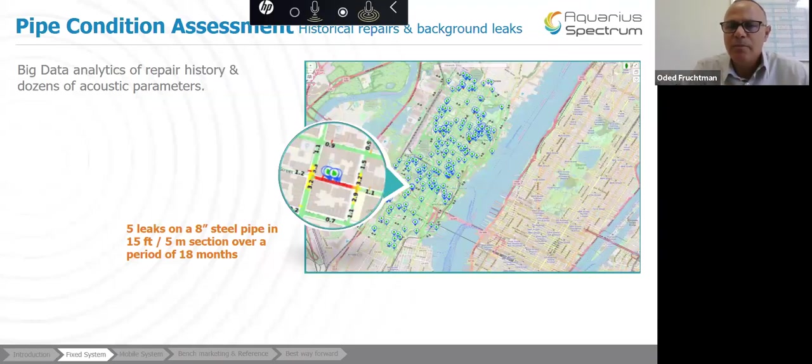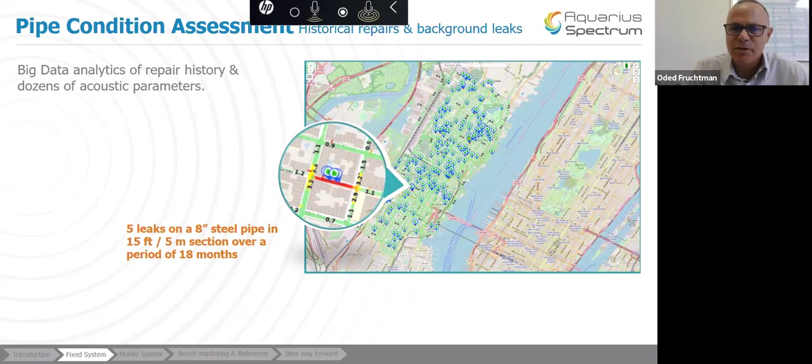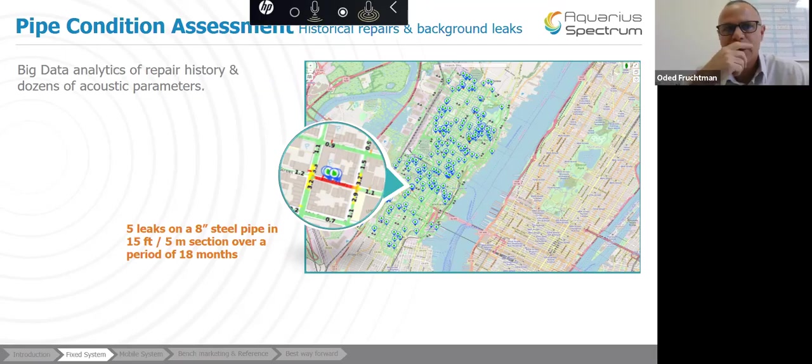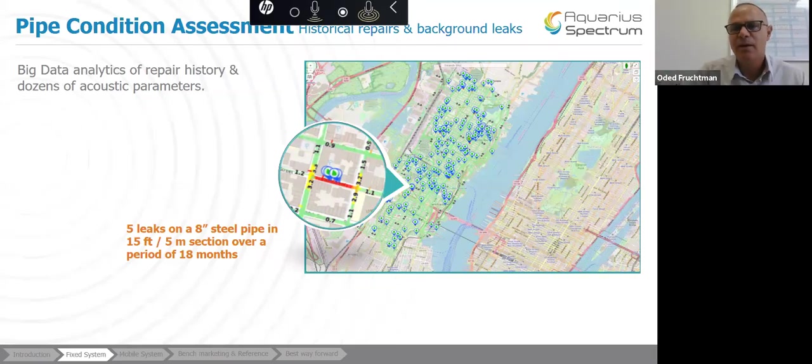When we do work with a customer, as we track down and when we apply the condition assessment model that we developed, you will see all the history of repair in a specific area. And in this example, you can see five leaks on an H steel pipe in a five meter section over a period of 18 months developed. That gives us a lot of information on that specific section being a bad section.